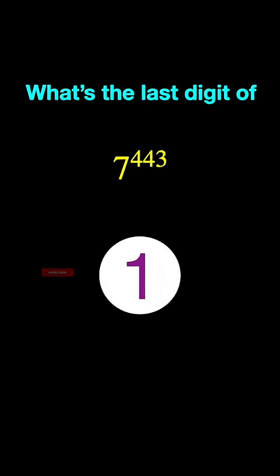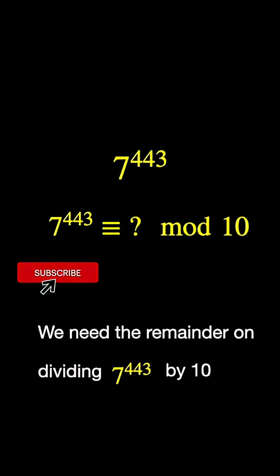We need to find the remainder on dividing 7 to the 443 by 10, meaning we need to know what it is congruent to modulo 10, because that's the last digit.